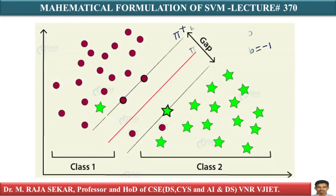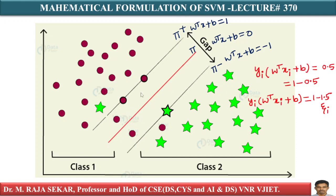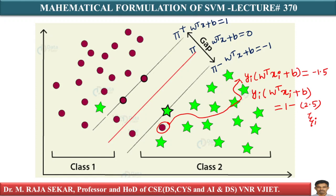Let me consider one more point. For this point, ξ equals 0.5 — meaning it is 0.5 distance units away from its original plane, which is π plus. In similar manner, consider this point: it is a positive point but it is in the negative area. Therefore, ξ equals 2.5, meaning it is 2.5 units away from its original plane.